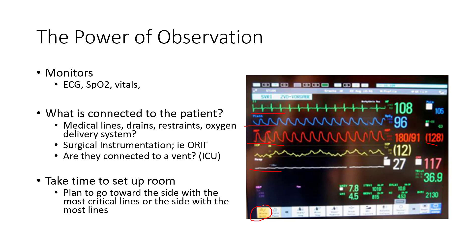Also look at surgical instrumentation — do they have an external fixator, are they hooked up to a vent if they're in an ICU setting? Just seeing what's there and being prepared helps you anticipate what you'll need to do to keep the patient safe while working with them, and how much time it may take to set up the room. Typically, you want to set up treatment toward the side with the most critical lines, like the arterial line, or the side with the most total lines — because you don't want to move away from them and put tension on them, which could cause them to become dislodged, which is a significant safety concern.